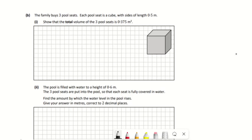The family buys three pool seats. Each pool seat is a cube with sides of length 0.5. To show the total volume of three pool seats: the volume of one of them would be 0.5 times 0.5 times 0.5, or 0.5 cubed. Then to get the volume of three of them, you'd multiply that by three and you'll get 0.375.